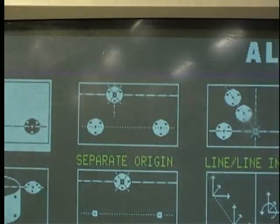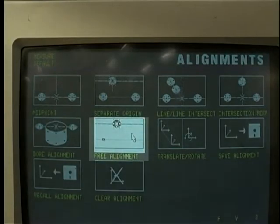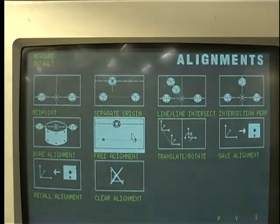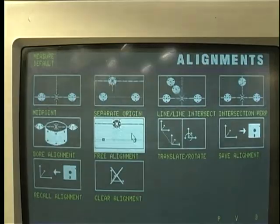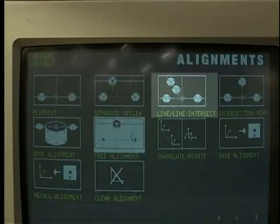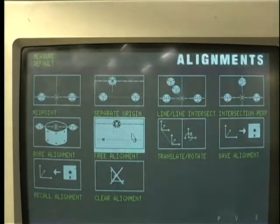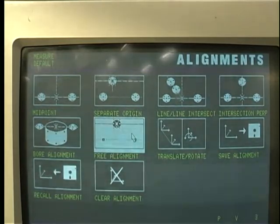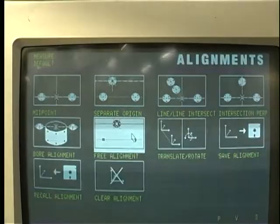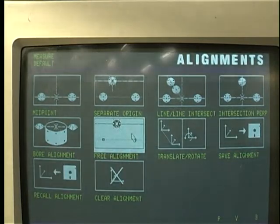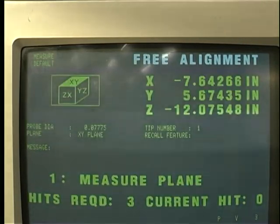Select free alignment, since the plane, line and hole center are being used in this example. If the features to be measured at an origin use the intersections of datum C and B, the lines aligned intersection could have been used. If the datum were two circular features or two point features, then separate origin could be used. You will need to learn which alignment mode to use for the type of datum features being used on your CMM. Once free alignment is selected, click on the recall button at the bottom of the screen.